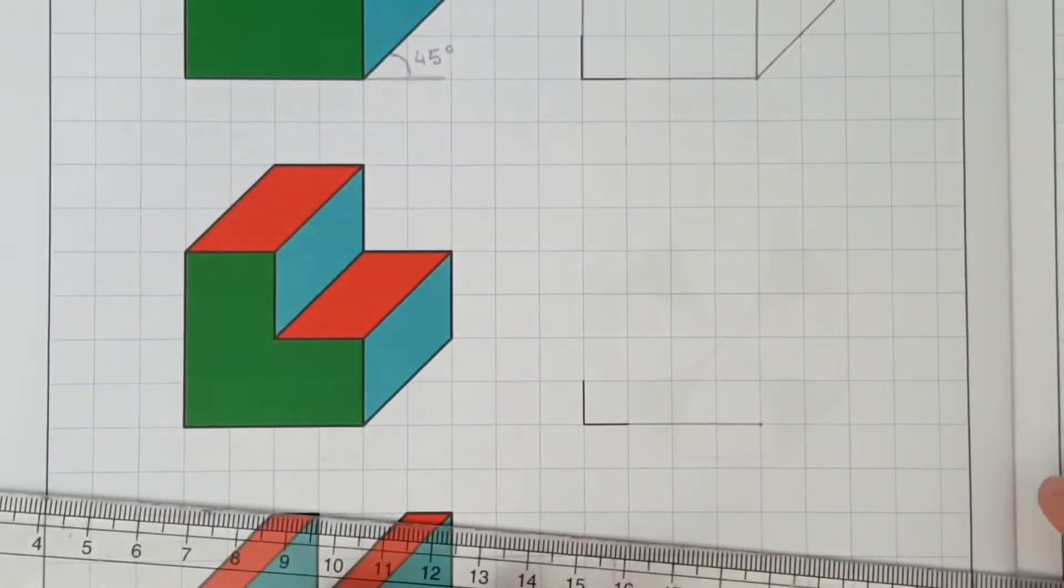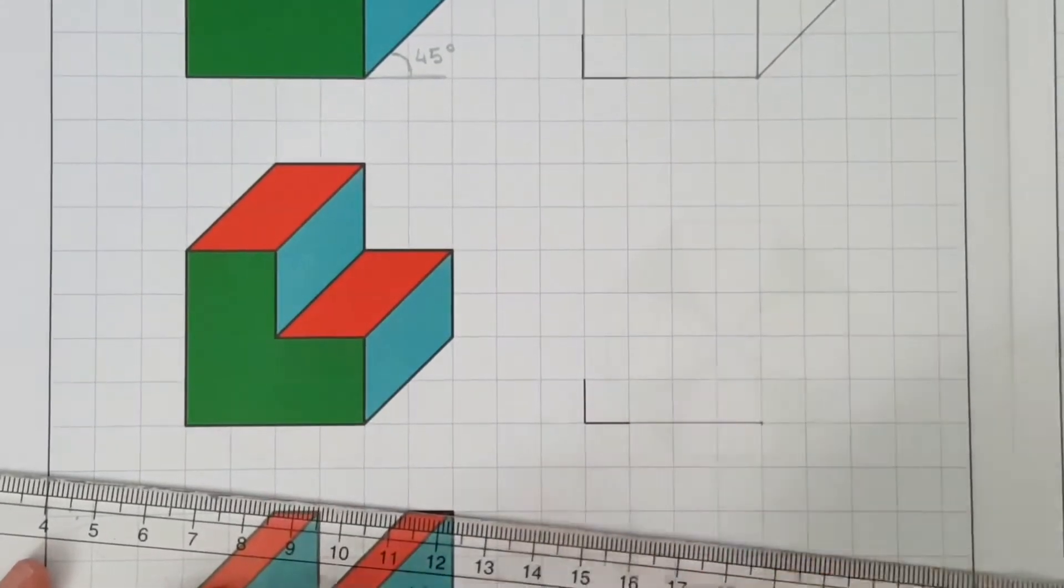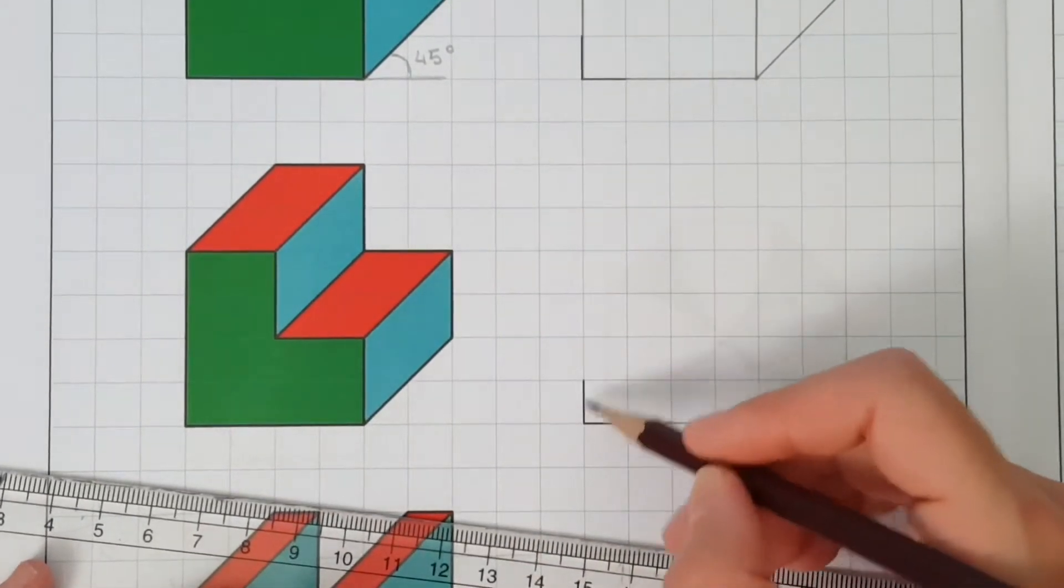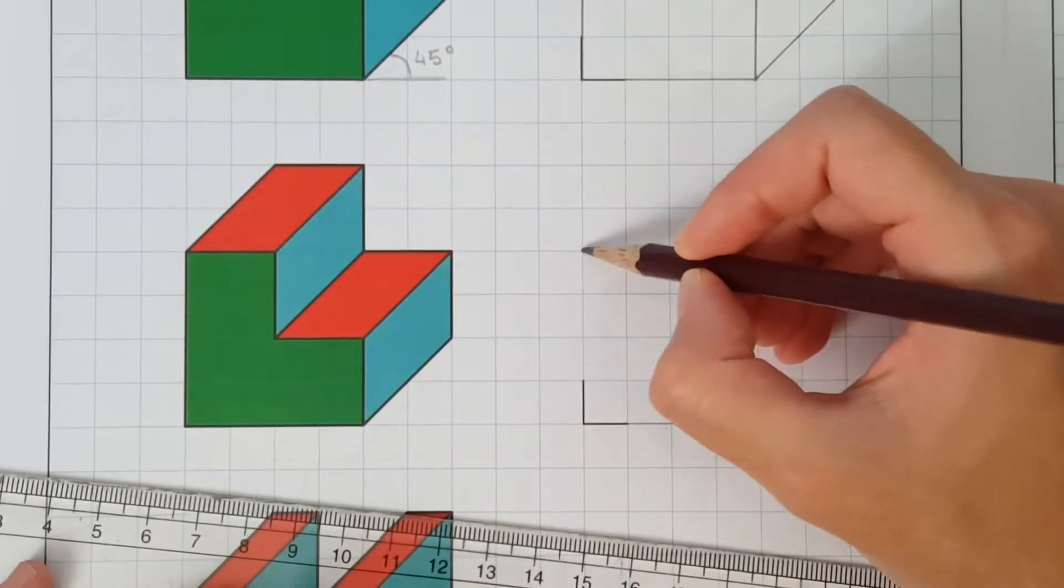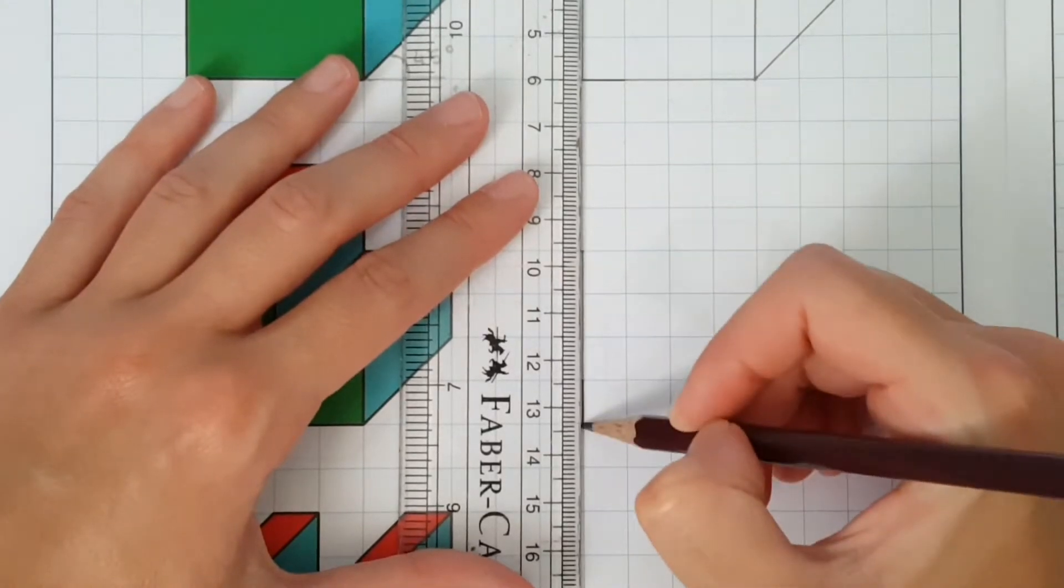Let's draw the back part of this L shape. This vertical line right here is again 4 squares high. So 1, 2, 3, 4, mark a dot if you find that helpful, and then draw your construction line.